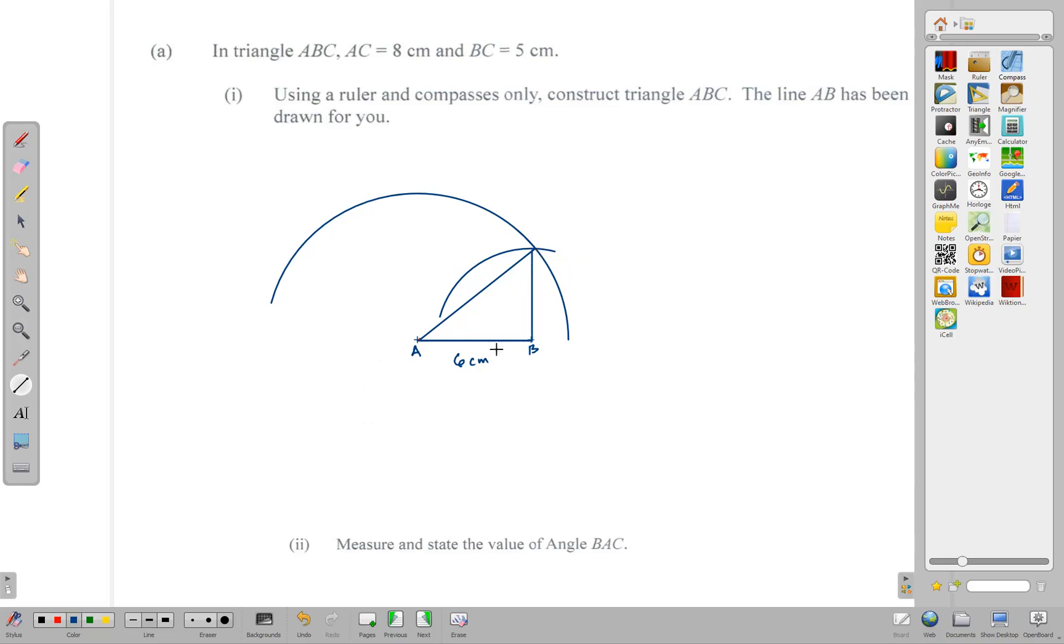I want an intersection point. Then I'm going to draw my lines: AC starting here where the two lines intersect and taking it to point A, and also from point B to that same intersection point.